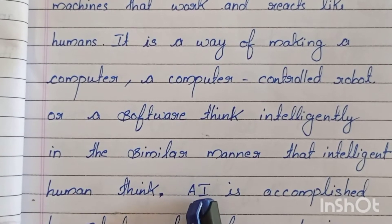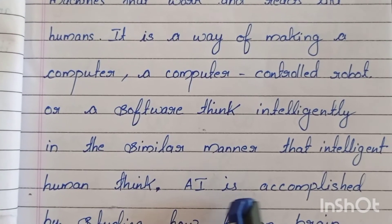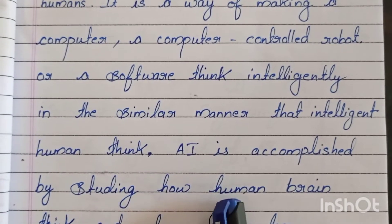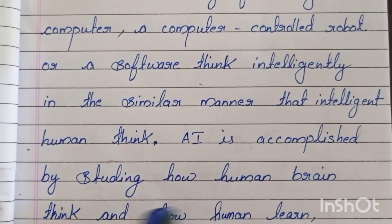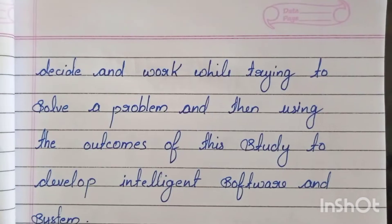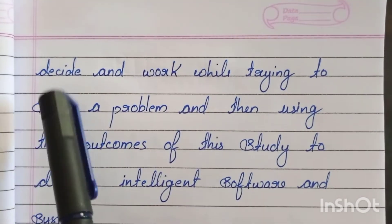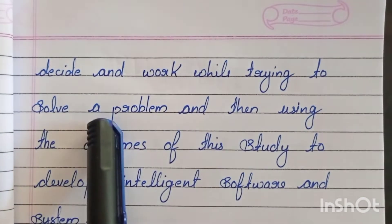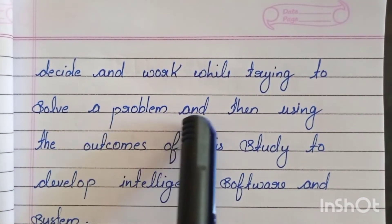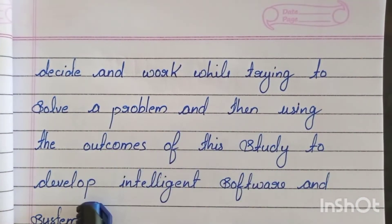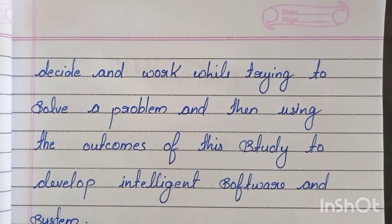Artificial intelligence is accomplished by studying how human brain thinks and how humans learn, decide and work while trying to solve a problem, and then using the outcomes of this study to develop intelligent software and systems.